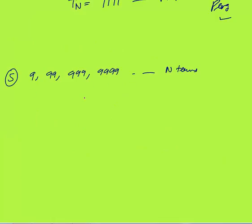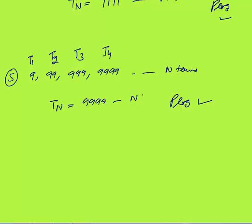The fifth sequence is 9, 99, 999, 9999 up to n terms — is this a progression? Yes, because we can find the nth term. Term number 1 has one '9', term number 2 has two '9's, term number 3 has three '9's, and term number n has '9' repeated n times. So we can find the nth term — that is a progression.